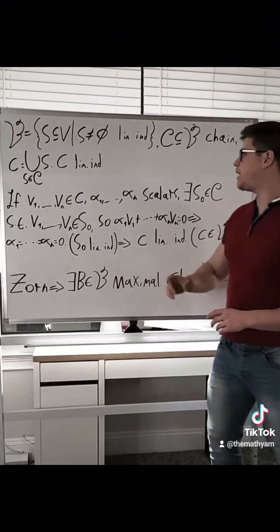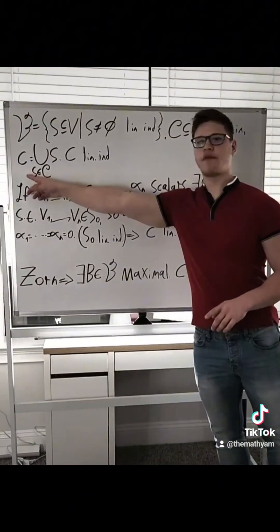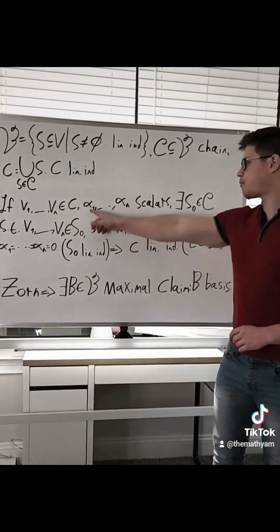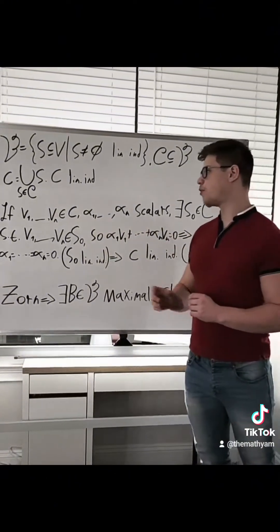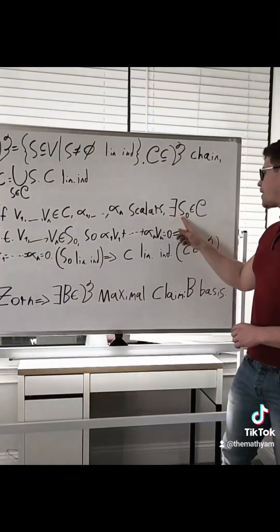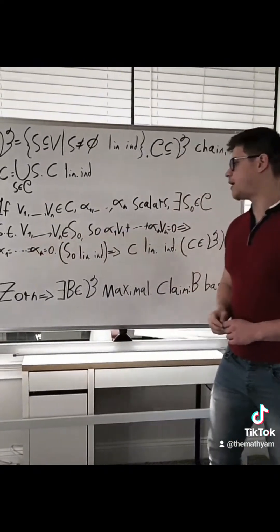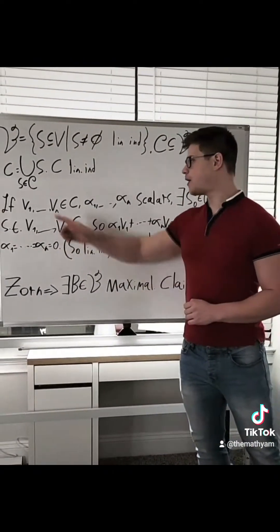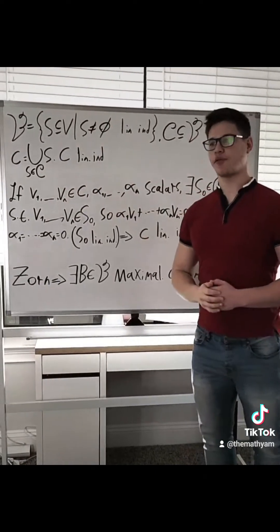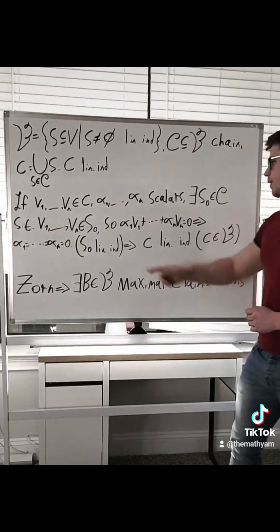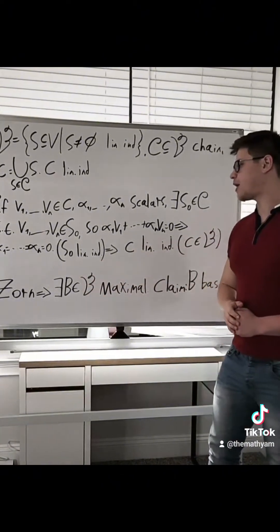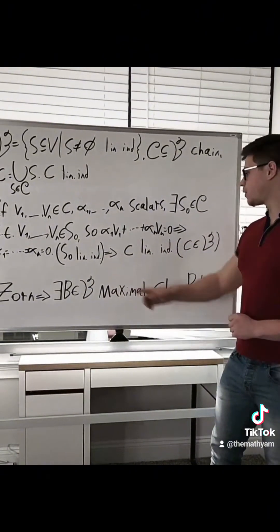So on the previous board, we had this set B, we had some chain inside of it, and we defined this supremum of the chain, and we wanted to show that it's linearly independent. So we take some vectors V1 up to Vn in C and some scalars alpha1 up to alphan. By the definition of C, and because this set is a chain, there is already some set S0 inside of the chain such that V1 up to Vn are inside of S0. You can think of this C actually as an increasing union, where each set here is contained in the next set. So because they're already in S0, we know that if we have a trivial linear combination, then all of these scalars are already zero. This is just the statement that S0 is linearly independent.